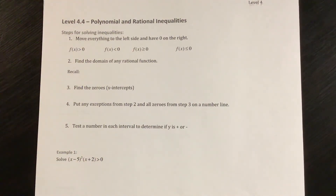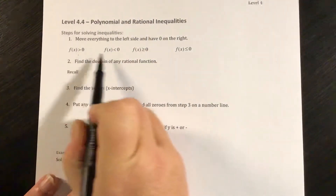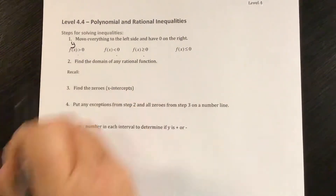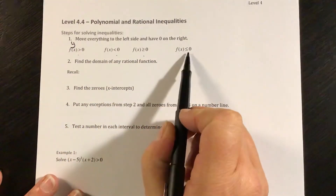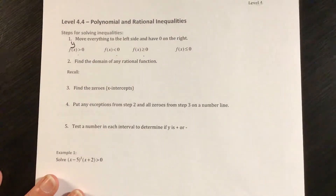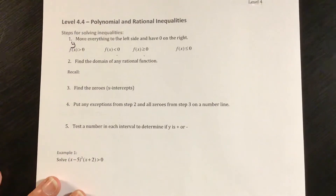In finishing up unit 4, we are looking at inequalities of both polynomial and rational functions. We've done this before when working with quadratic functions, which is a polynomial, looking on the graph to see where the function is greater than or less than 0. Remember, f of x is just our y values — so where are our y values greater than, less than, greater than or equal to, or less than or equal to 0. The y values are greater than 0 above the x-axis, so looking at where the graph crosses the x-axis provides important information.